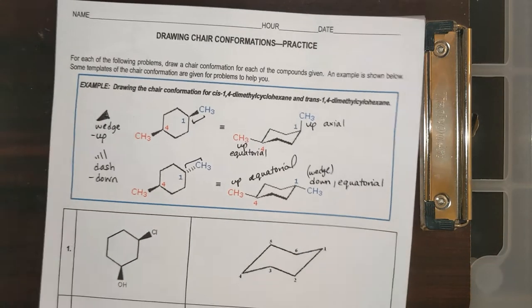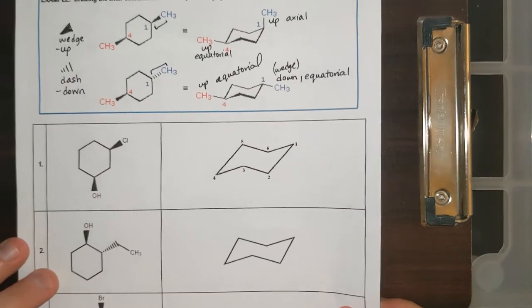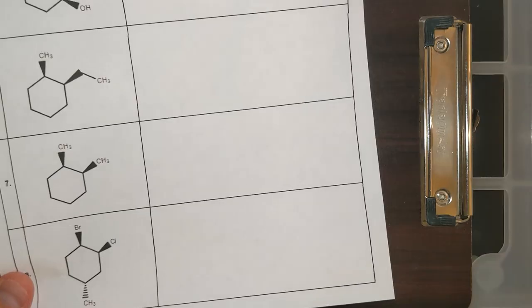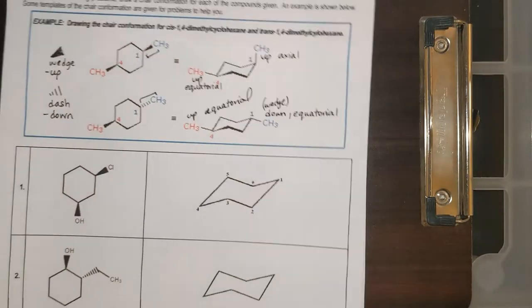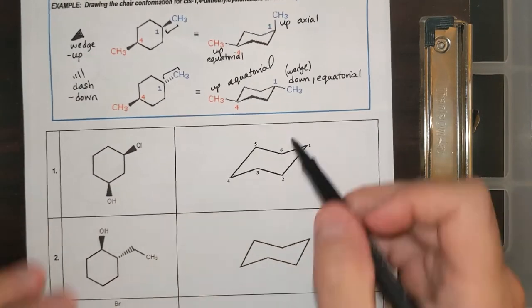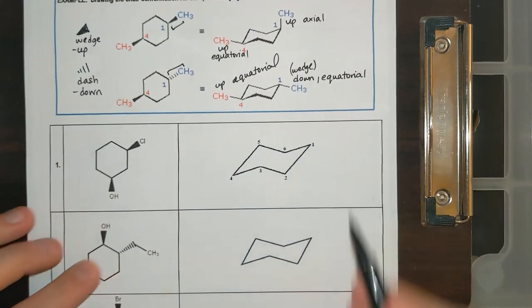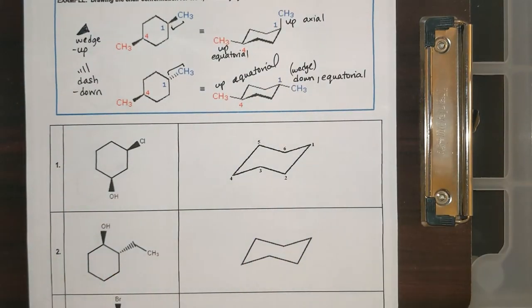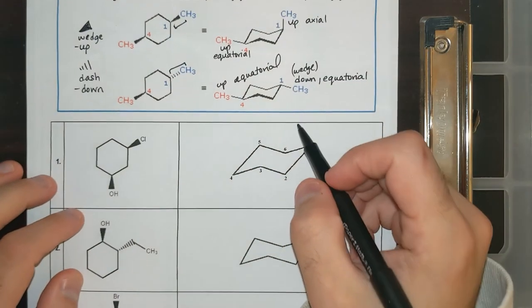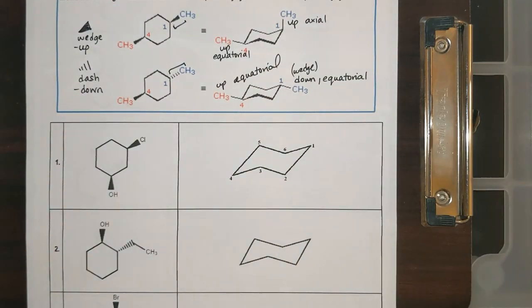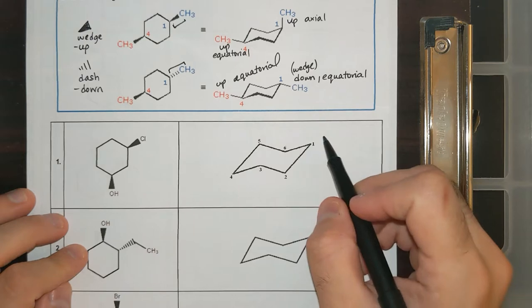Let's do the first couple together. On questions five through eight, you're going to have to draw the chair conformation by yourself, but for the first four questions, I kind of put them there for you. You should number them like this — one, two, three, four, five, six — if you want to keep it consistent and know where you're going to put things.